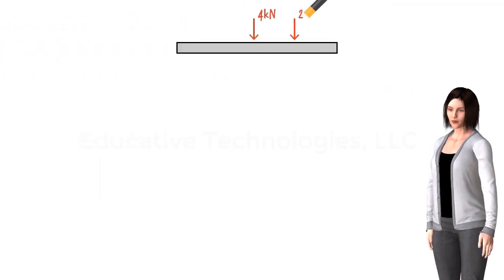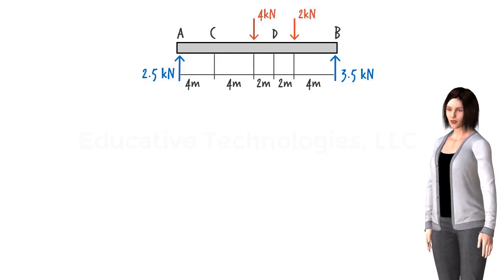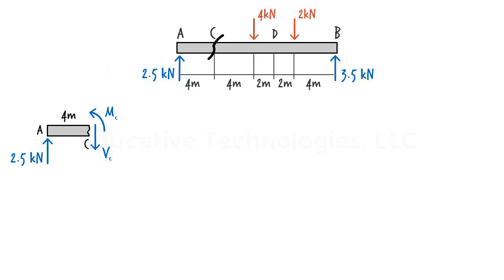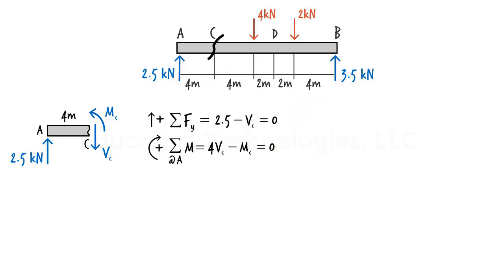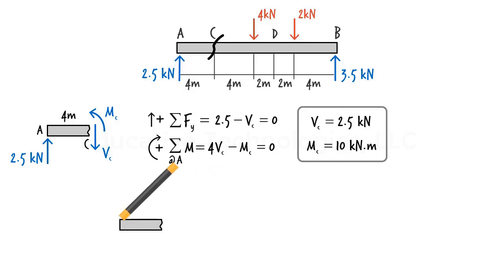Here are the support reactions shown graphically. To determine shear and moment at point C, we conceptually cut the beam at C and draw the free body diagram for the left segment, since it is more convenient. Note that the internal axial force at C is omitted since there are no applied forces in the x-direction. From the equilibrium equations, we get VC equals 2.5 kilonewtons and MC equals 10 kilonewton meters. Here are the results shown graphically on the beam.